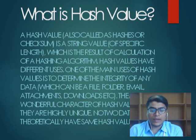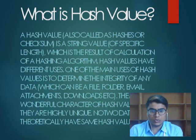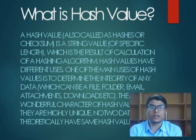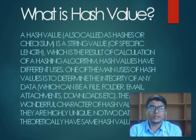When we have a file — a download, email, PDF, docs file, or image — each has a specific hash value. It is called a numerical value. A hash value can never be the same for two different files, just as two humans' fingerprints can never be the same.